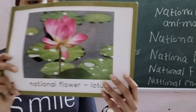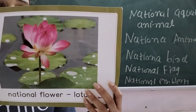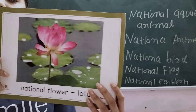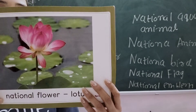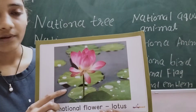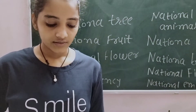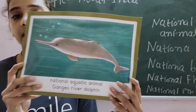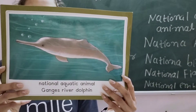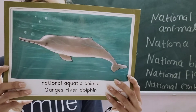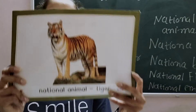Next is the national flower. This is the lotus. It is the national flower of India. It grows in ponds and lakes, and it is also found in the river Ganga.